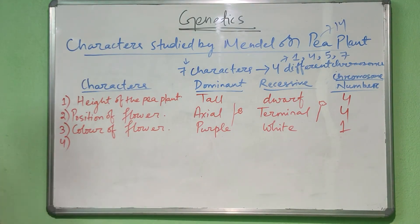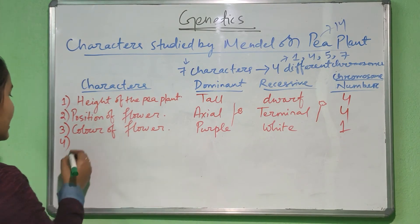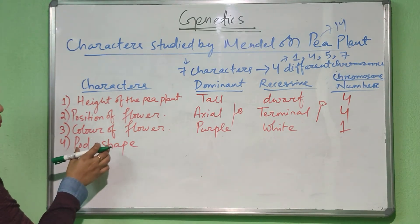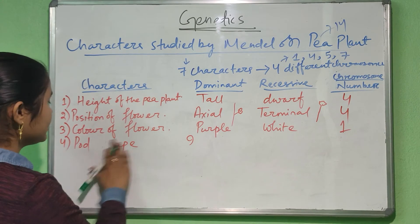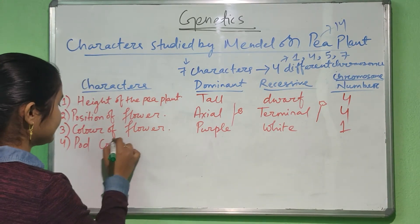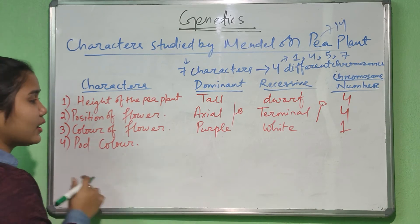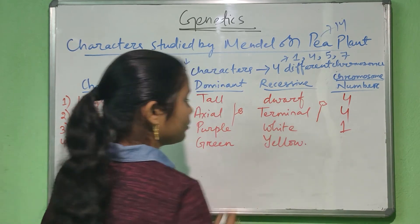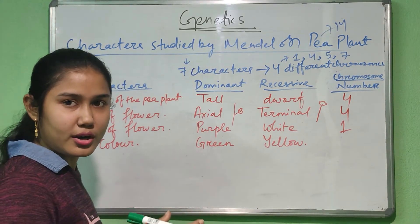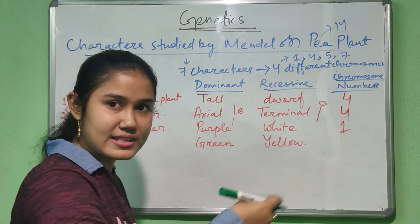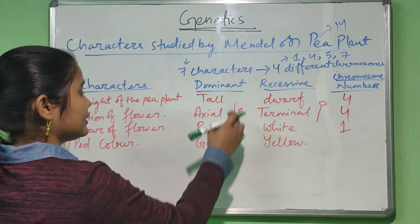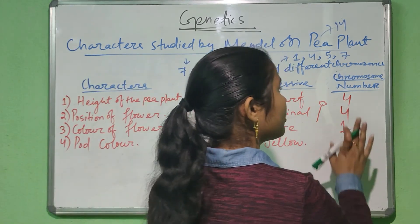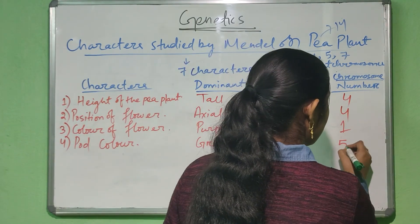The fourth character is the pod color. The pod color can be green or yellow. The pod is where the seeds are present. The dominant character is green and the recessive character is yellow. This character is located in chromosome number five.